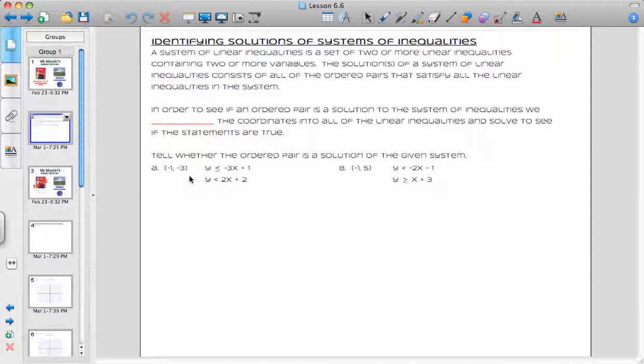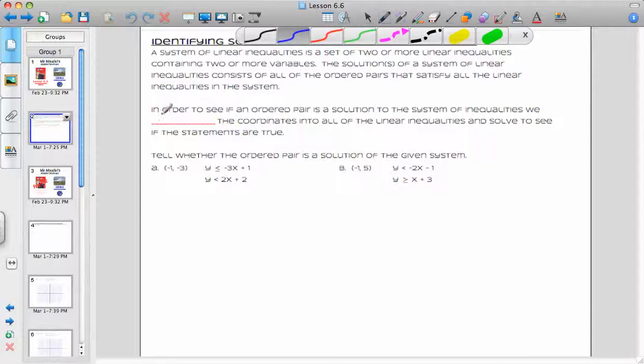So in order to see if an ordered pair is a solution to the system of inequalities, we are going to need to do a similar thing that we've done in the past, and that is plug those coordinates in. So on your note-taking sheet, plug the coordinates in to all the linear inequalities and solve to see if they make the statements true.